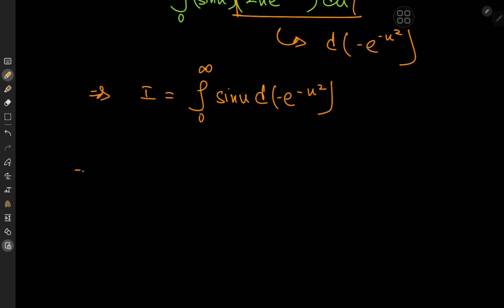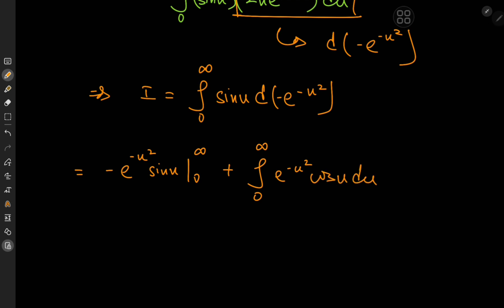Applying integration by parts gives us negative e to the negative u squared times sine u, evaluated from 0 to infinity, minus the integral from 0 to infinity of e to the negative u squared times cosine u du. For the boundary term: as u tends to 0, sine 0 equals 0, and as u tends to infinity the exponential term goes to 0 — so the boundary term collapses to 0. This implies I is now the integral from 0 to infinity of e to the negative u squared times cosine u du.